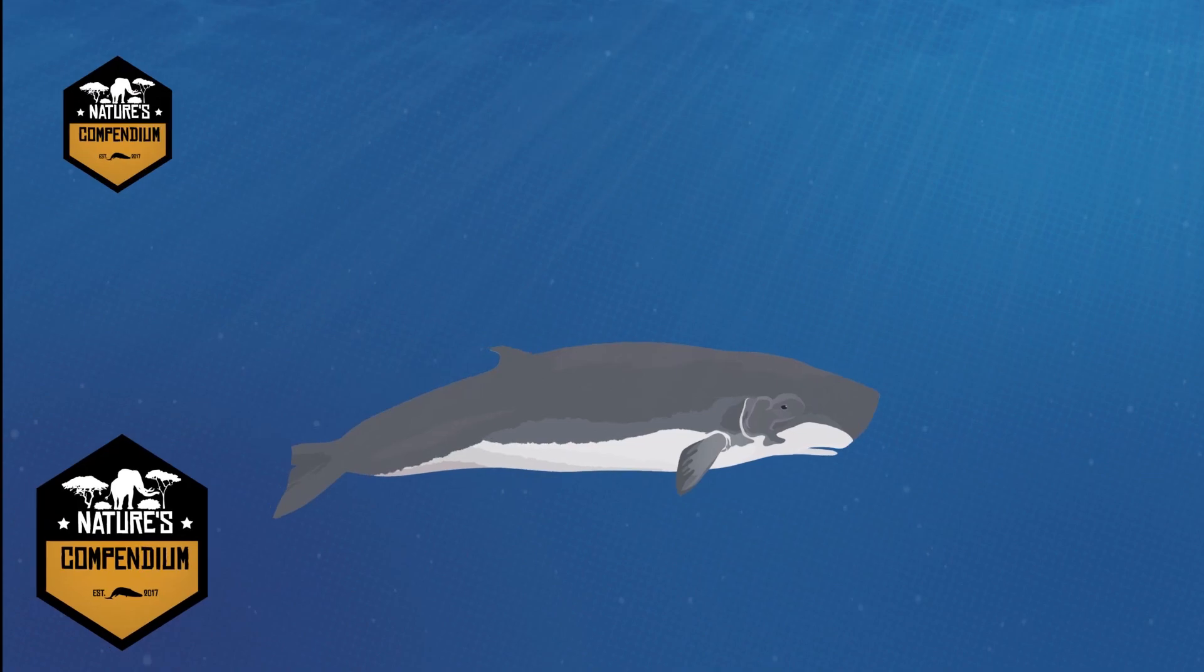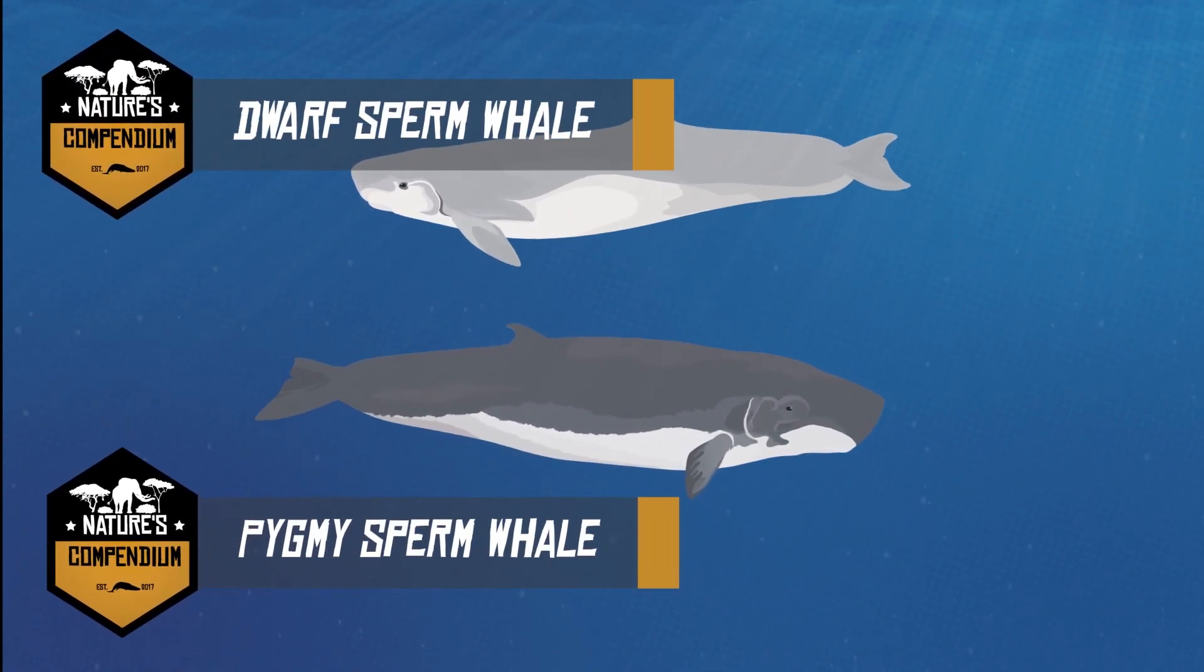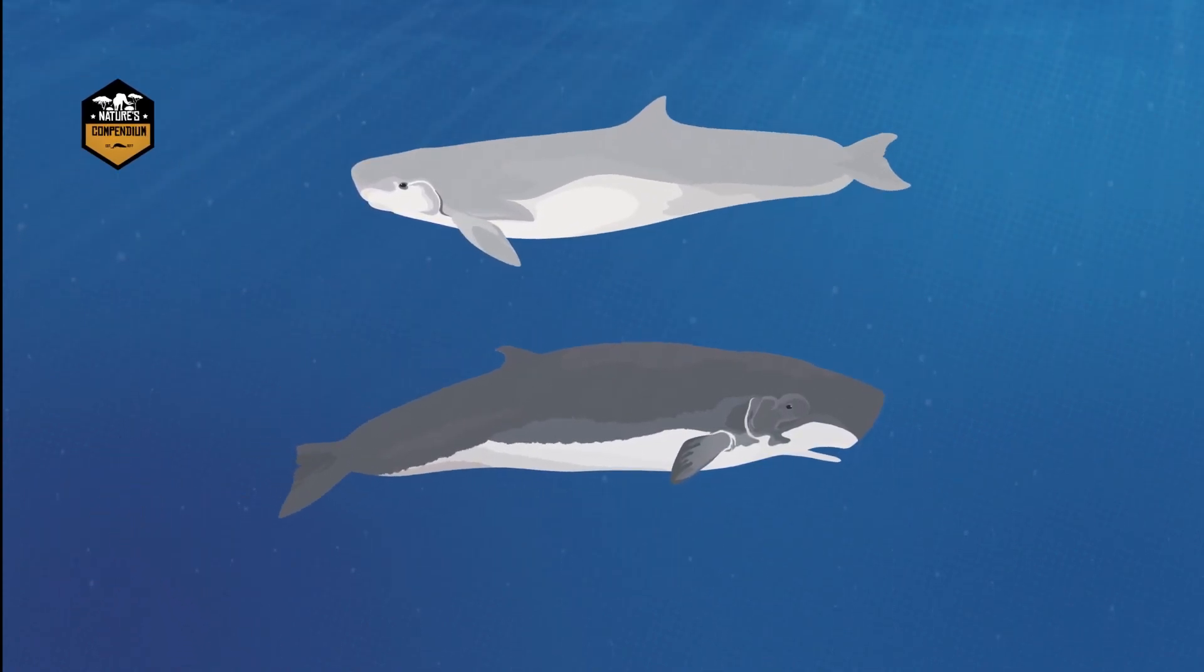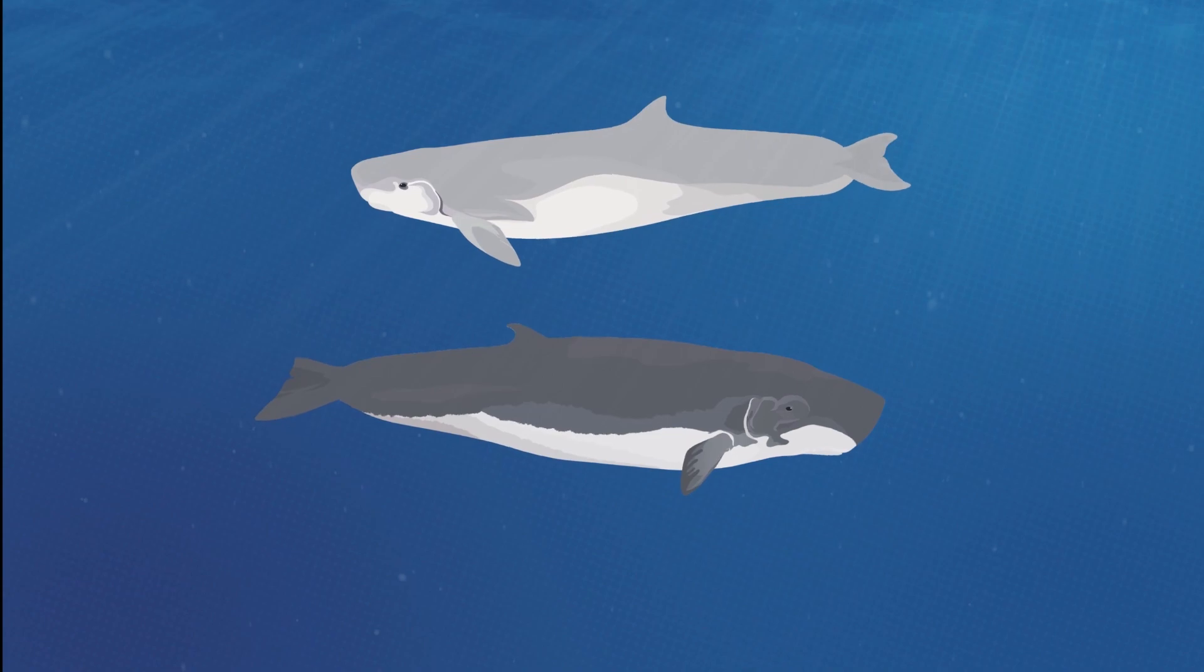Today, the only living relatives of sperm whales are the pygmy sperm whale and the dwarf sperm whale. Both animals are members of the Cogidae family and have the unique ability to produce ink to help evade predators.